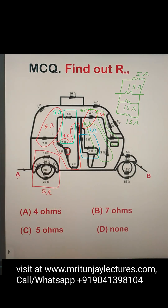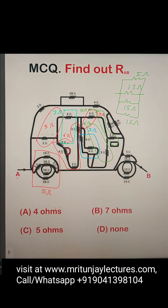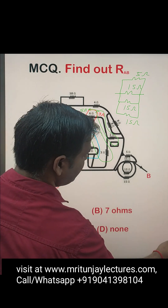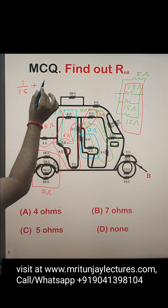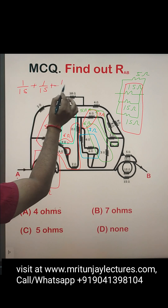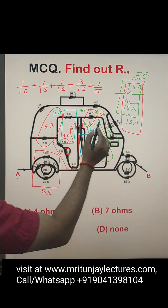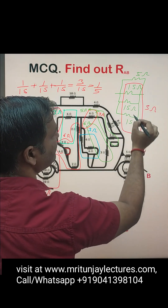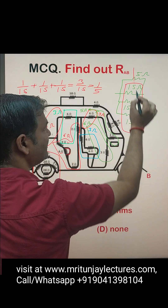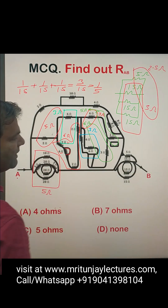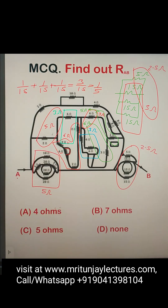Look again: three 15Ω resistors in parallel. First determine their combination: 1/15 + 1/15 + 1/15 = 3/15, so the equivalent is 5Ω. The combination of those three 15Ω resistors is 5Ω. Then 5Ω and 5Ω in parallel gives 2.5Ω.